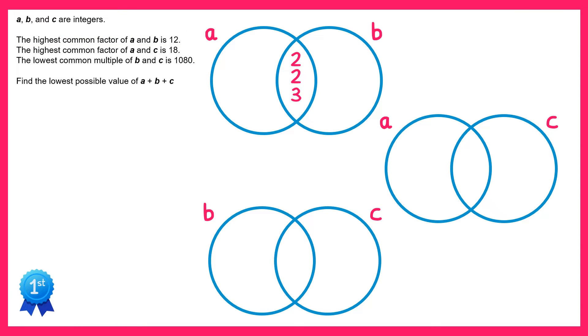In a similar way, if we look at the highest common factor of A and C, we're told that's 18, so on the Venn diagram for A and C, in the intersection here we need to put the prime factors for 18. 18 is 2 times 3 squared, so 2 times 3 times 3.